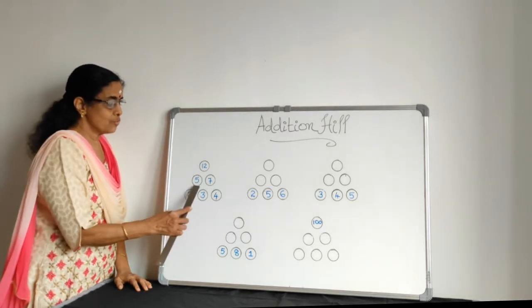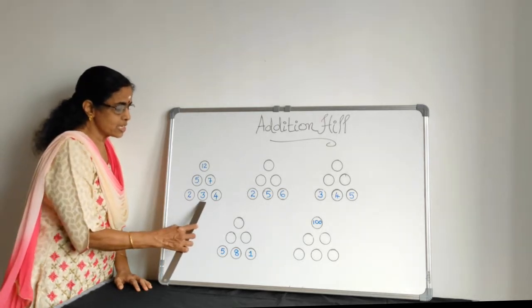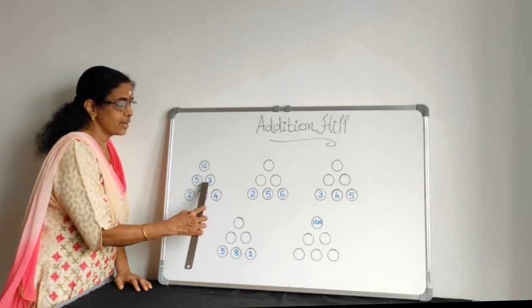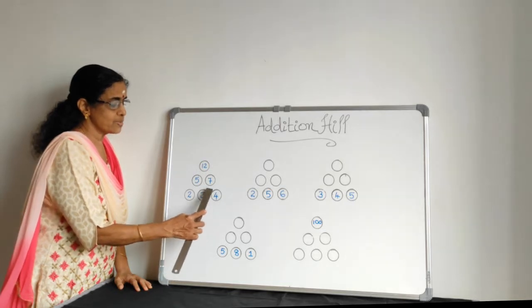Again 5 plus 7 gives 12. So how to do? First these 2 circles you have to add and write here. Again these 2 circles you have to add and write here. So 2 plus 3 gives 5. 3 plus 4 gives 7.